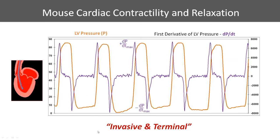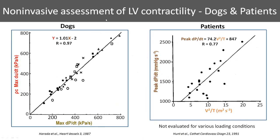This is considered the gold standard, but it is an invasive procedure and we can only do this once in a mouse. If we try to retract the catheter, we've already closed the carotid artery, which changes physiology. As you retract the catheter, there could be valvular damage or vessel damage, and that will not be physiologic for future studies. So there have been several instances in literature where, even in large animals and people, there have been attempts to get a so-called surrogate to replace the invasive DPDT measurements.